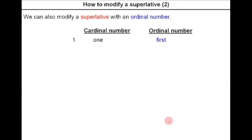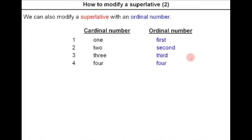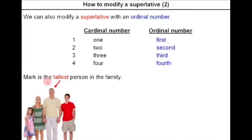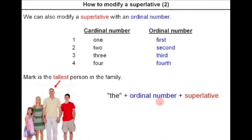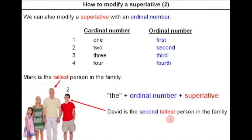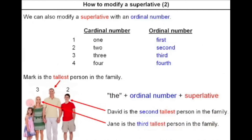We can also modify a superlative with an ordinal number. An ordinal number refers to the order — for example, cardinal number 'one', ordinal number 'first'. For example: Mark is the tallest person in the family. But using the ordinal number structure — the plus ordinal number plus superlative — David is the second tallest person in the family, and Jane is the third tallest person in the family.